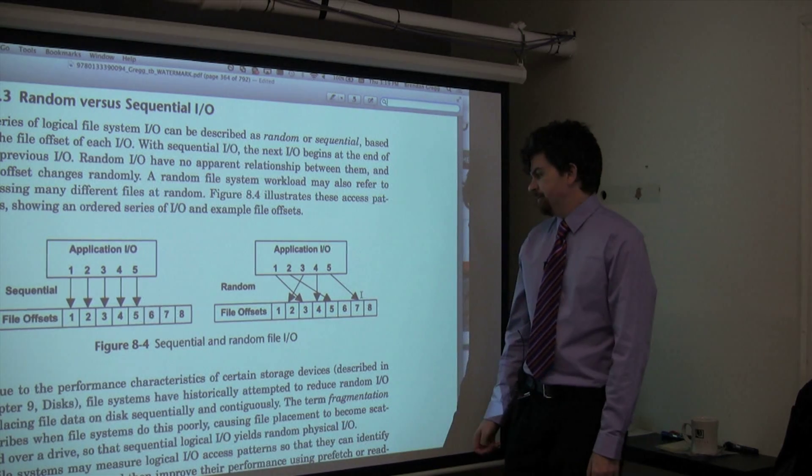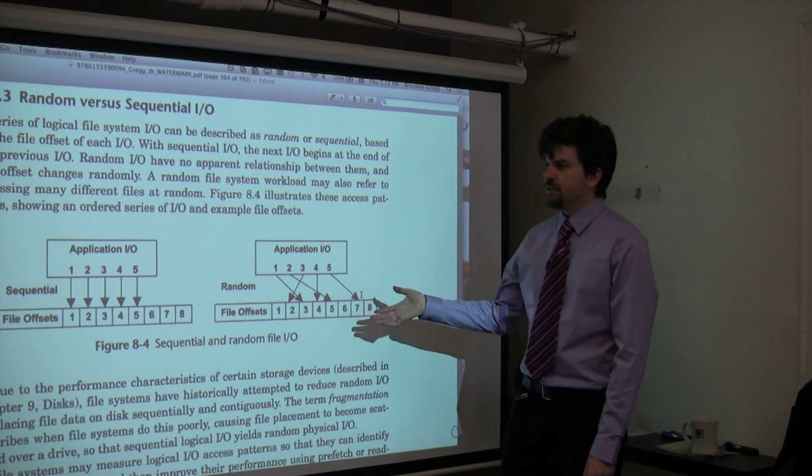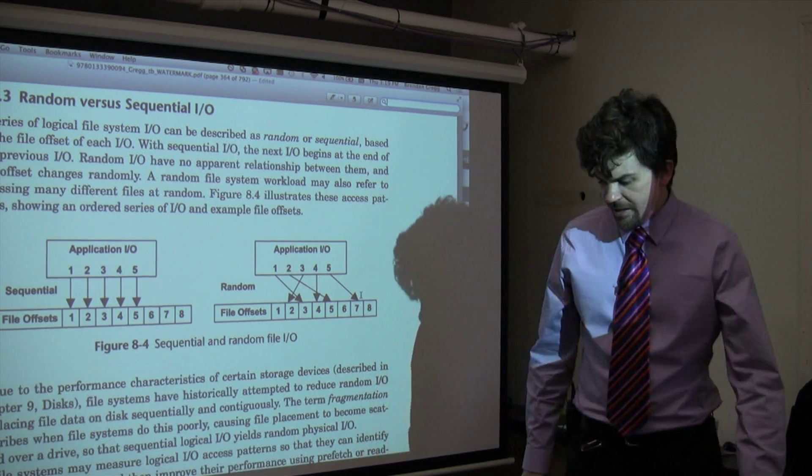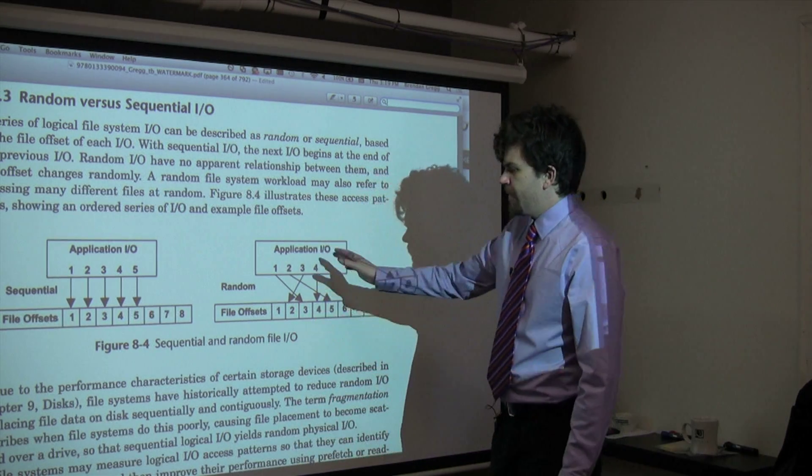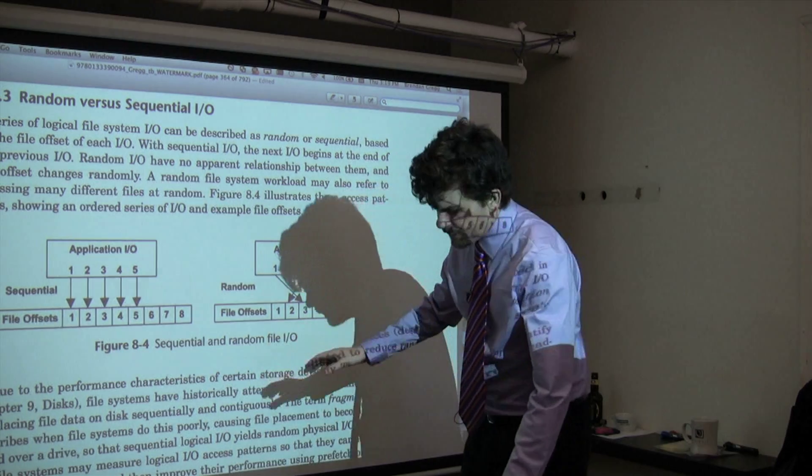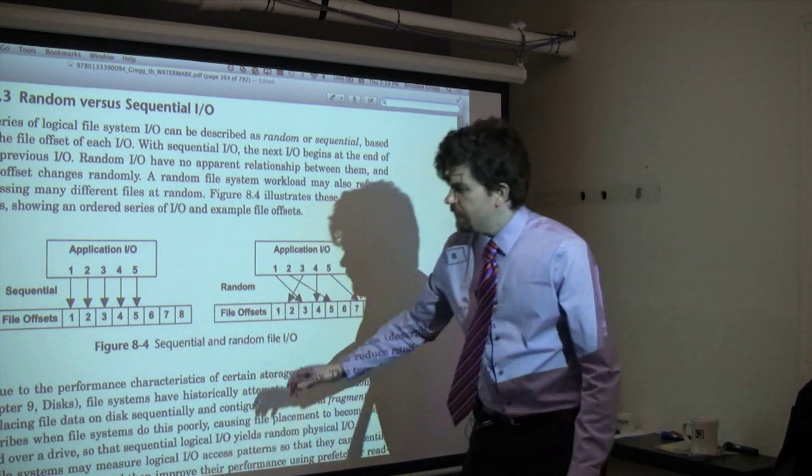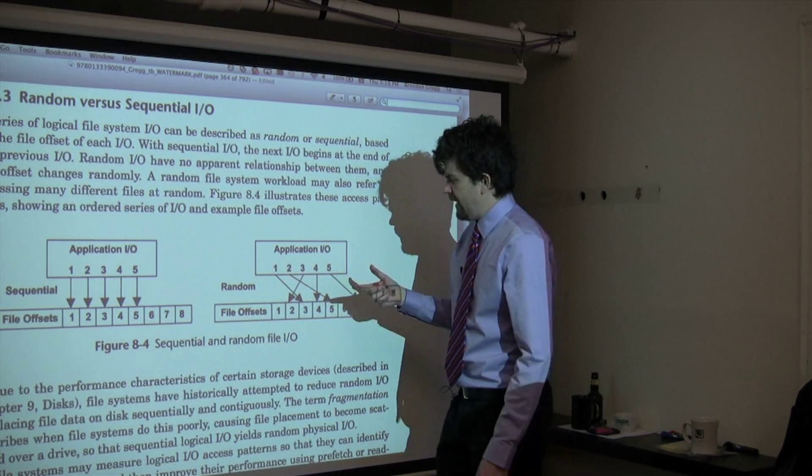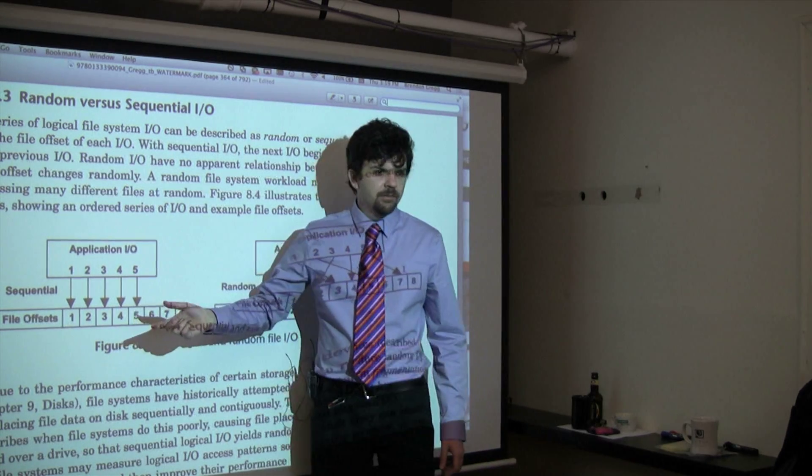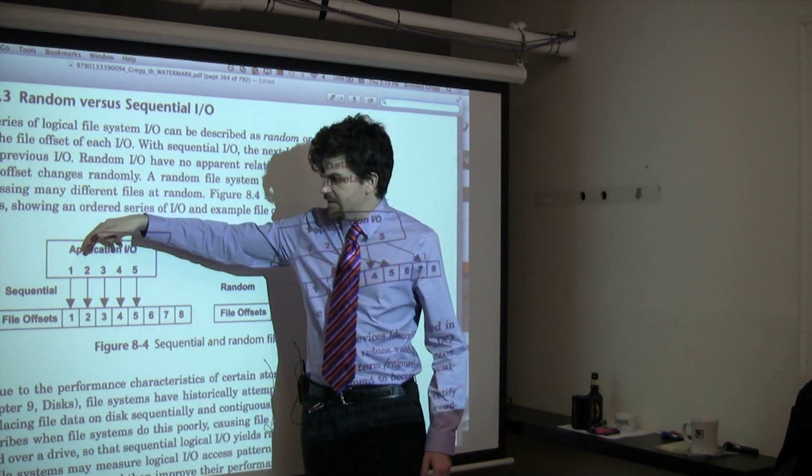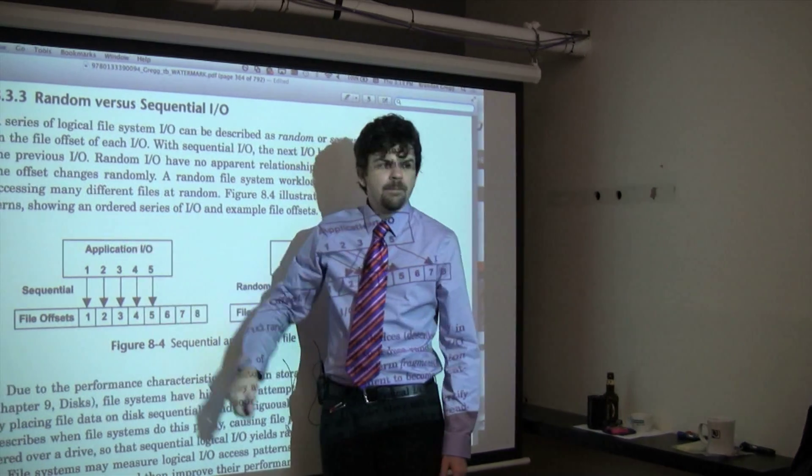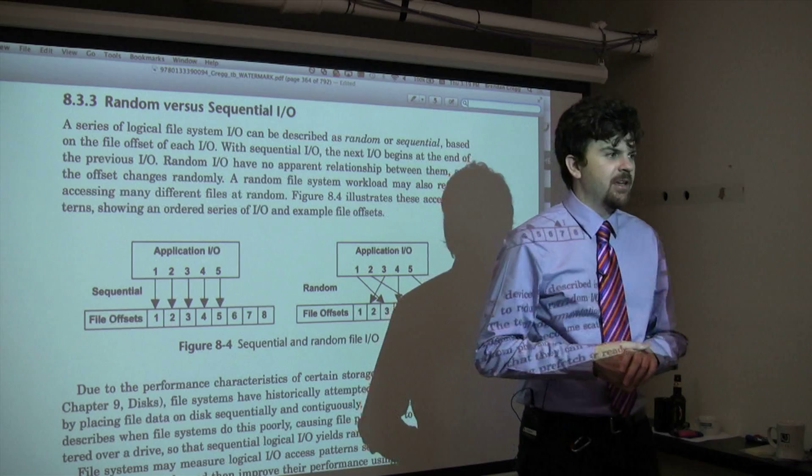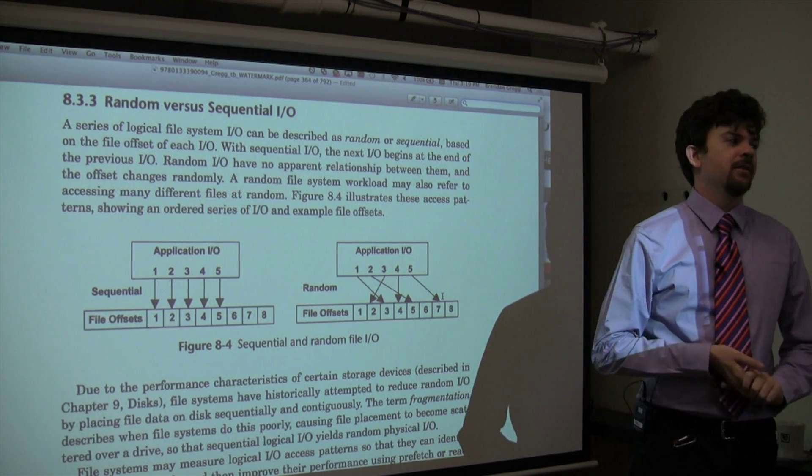File systems do a lot of things to try and improve performance, and this does help us make a decision. If I'm doing a sequential workload and accessing offset 1, 2, 3, the file system can eventually get to the point where it can predict what your next I/O will be before you've issued it.